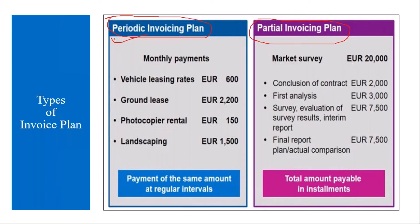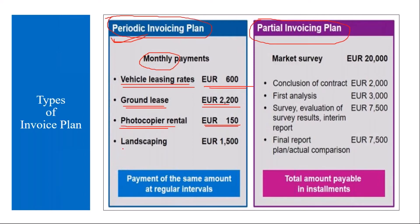The periodic invoicing plan — examples include vehicle leasing rates where every month you want to pay an amount for leasing the vehicle. It involves monthly payment periodically to the supplier. Other examples are ground lease — say you hired a cricket ground and every month you pay some amount — or a photocopier rental where every month you pay a fixed amount, or landscaping services. These kinds of things come under the periodic invoicing plan: payment of the same amount at regular intervals.